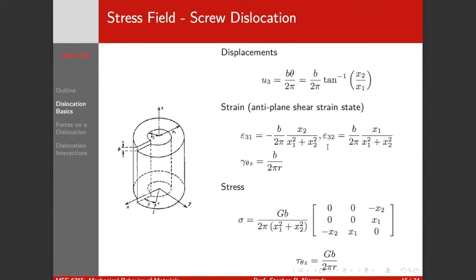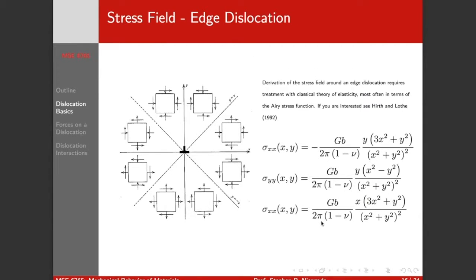And so we have a strain field - there's no strain in the 1-1 or 2-2 direction. We have a shear strain in the 3-1 and the 3-2, or we can write it in terms of theta-z coordinates. So we only have two non-zero strain terms. We can then, if we assume isotropic elasticity, we have a stress term that looks like this in Cartesian coordinates or this in polar coordinates. So it's pretty straightforward to compute the stress and strain field for a screw dislocation. You should try and work through it by yourself.